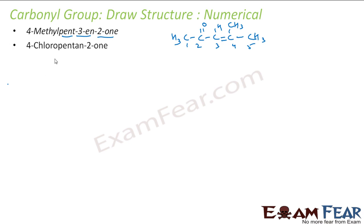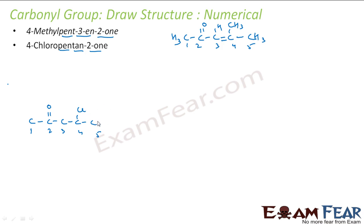4-chloropentan-2-one. That means it's pentane — let me draw 5 carbons: 1, 2, 3, 4, 5. Let me put the numbers. At 2, I have one — let me put a ketone at 2. At 4, I have a chloro — put chloro at 4. This is my structure. Other things, you can just put extra hydrogens. And this is CH3.